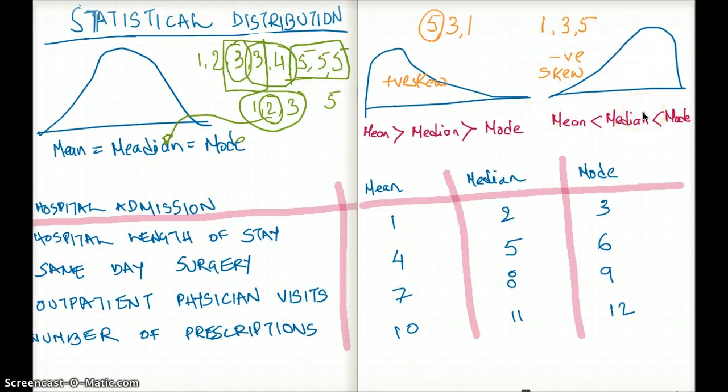So now you have a quick overview of the statistical distribution. Now let's see how it can come in a question that can give you a heart attack. We know this, we understand this, and then we see a question and we get all panicky. So let's see a question.